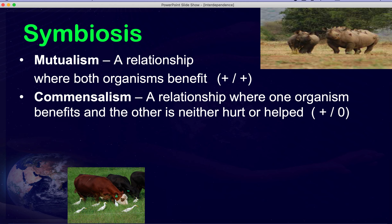The second type is commensalism, where one organism benefits and the other is neither hurt nor helped. For example, cattle or buffalo run through a field, kicking up worms and small animals. The birds come along and eat those worms, while the cattle or buffalo are neither helped nor harmed — they're just running through the land.